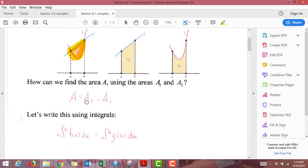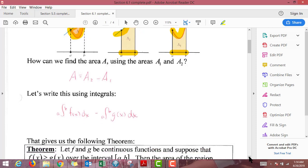So if I translate these into integrals, well, A_2 is the integral from a to b of what function are we finding the area under, right, f, and then I'm subtracting off from that the area from a to b underneath of g.